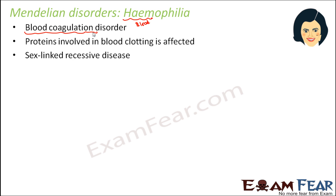Hemophilia is a sex-linked recessive disease. The gene responsible for the synthesis of this clotting protein is located on the X chromosome. Whichever gene is located exclusively on the X chromosome — for which there is no corresponding allele on the Y chromosome — gives rise to a sex-linked disease. The allele responsible for the synthesis of this protein, which in turn affects the blood coagulation factor, is located on the X chromosome.